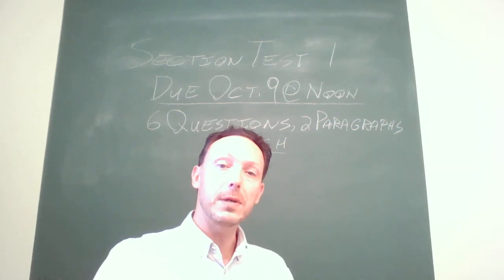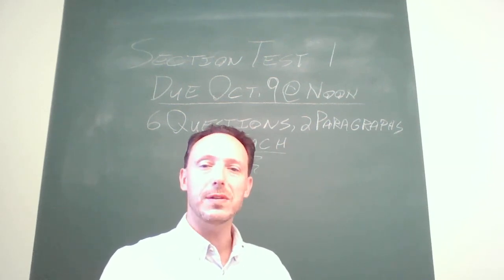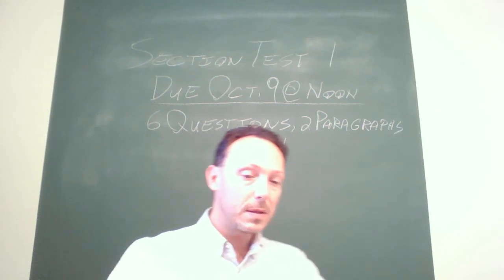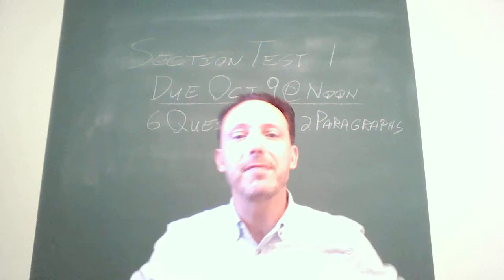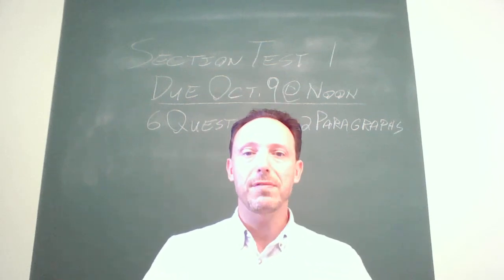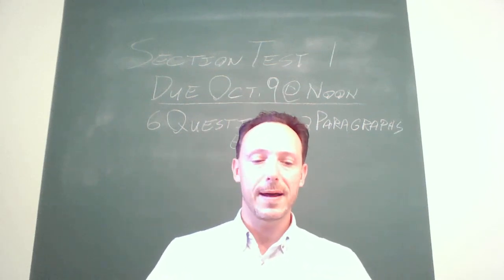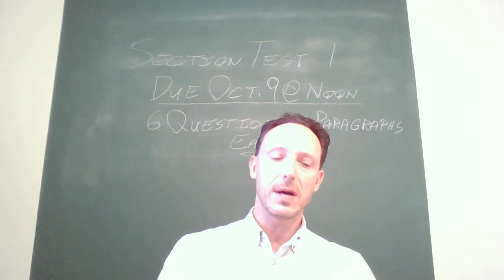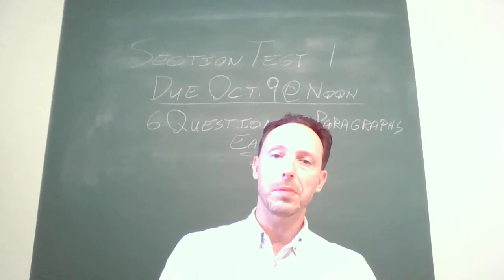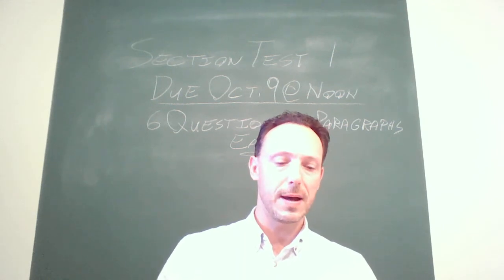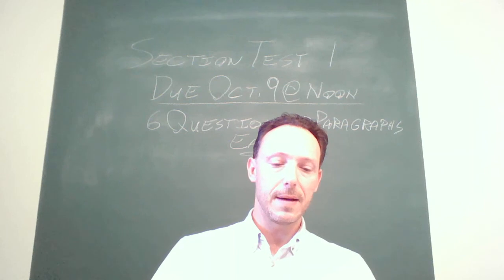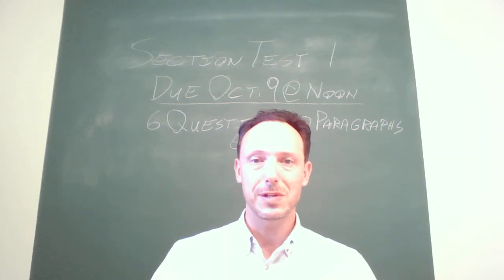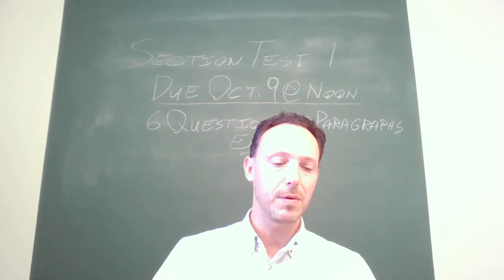Basically this should be really straightforward: three Socrates questions, three Aristotle questions. The questions are weighted at five points each for a total of 30 points. You can see from the course syllabus the way that fits into your grade. The first thing you'll find on the test is a bunch of boilerplate from the course syllabus — the description of the section tests. It's short answer, five points each for a total of 30 points.